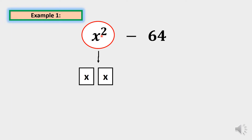You have x times x. So when you see x squared, it automatically factors as x times x — no need to write 1 here. Next, factor the second term: 64. What is the square root of 64, or a number that multiplied by itself gives 64?